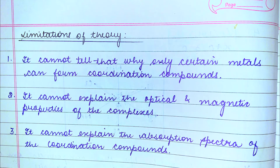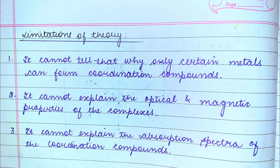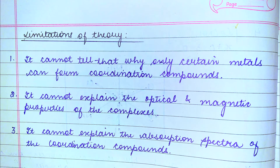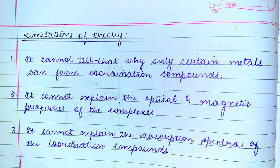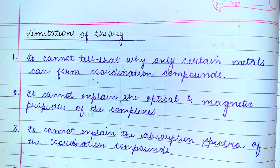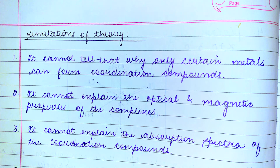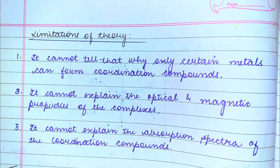Next come the limitations of Werner's theory. It cannot explain why only certain metals can form coordination compounds. It cannot explain the optical and magnetic properties of complexes, and it cannot explain the absorption spectra of coordination compounds. Therefore, the second theory, Valence Bond Theory (VBT), came into existence. In the next video, we will be learning about Valence Bond Theory in detail. Thanks for watching.